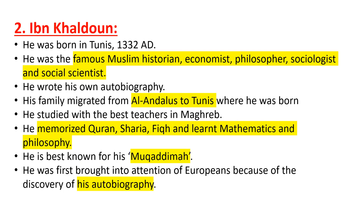The second one is Ibn Khaldun. He was a Muslim scientist. He was born in Tunis in 1332 AD. He was a famous Muslim historian, economist, philosopher, sociologist, and social scientist — because he was also a scientist in these fields.